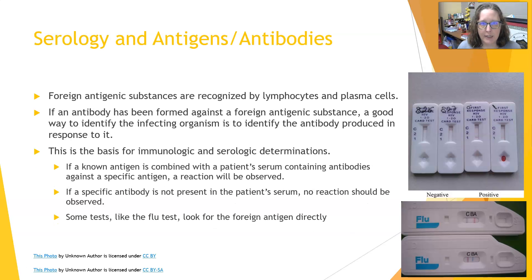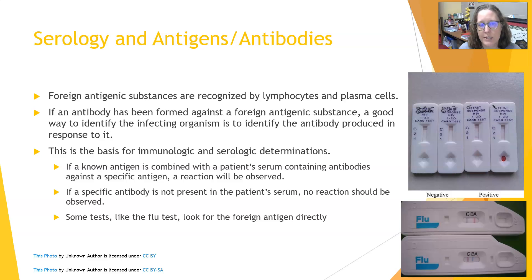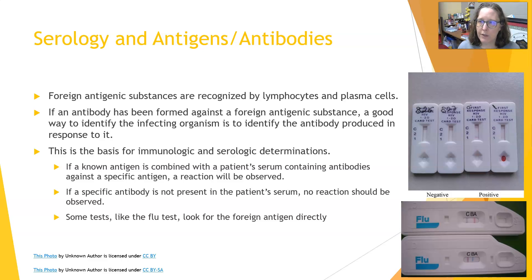A foreign antigenic substance is going to be recognized by lymphocytes and plasma cells, and their reaction to it is going to be the formation of antibodies. So if an antibody has been formed against a foreign antigenic substance, a good way to see if the infecting organism was present is to find the antibody in the patient's serum or plasma. This is the basis for immunological and serological determinations — this is especially true for things that aren't easily cultured. We can get samples and culture bacteria pretty easily, and even culture yeast pretty easily.